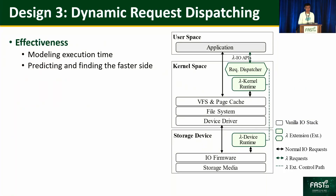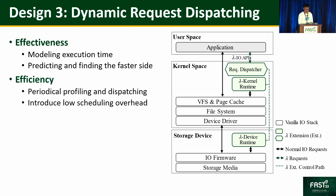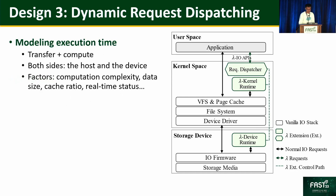The third design is dynamic request dispatching. The goal is to dispatch requests to the faster side — host or device — effectively and efficiently. For effectiveness, we model the execution time on both sides so that Lambda I/O can predict execution time and find the faster side. For efficiency, the request dispatcher profiles and dispatches periodically, introducing low scheduling overhead. Execution time is composed of data transfer and data computation, and we consider factors such as computation complexity, data size, cache ratio, and real-time load on both sides. In this presentation, we focus on cache ratio.